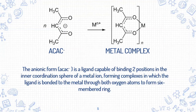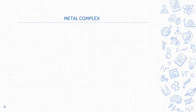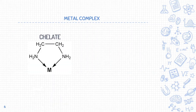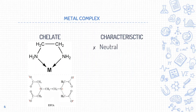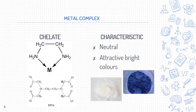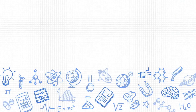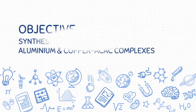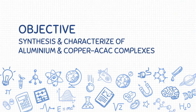We call this ligand bidentate. A metal complex containing a bidentate or polydentate ligand is often called a chelate. In general, the metal acetylacetone complexes are neutral and have attractive bright colours. The objective of this experiment was to synthesize and characterize aluminium and copper acetylacetonate complexes.